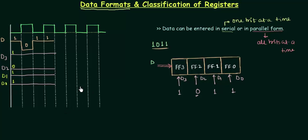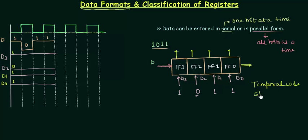This is a small introduction about the data formats. You can also extract the stored data in serial or parallel form. If you want to extract in serial form it comes out one bit at a time, and in parallel form all bits come out together. The serial form is called the temporal code and the parallel form is called the spatial code.